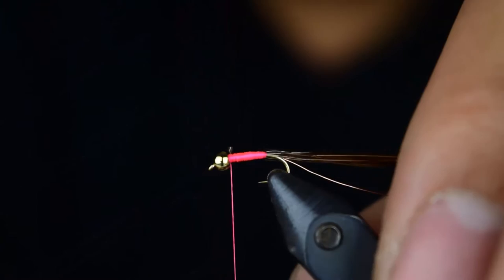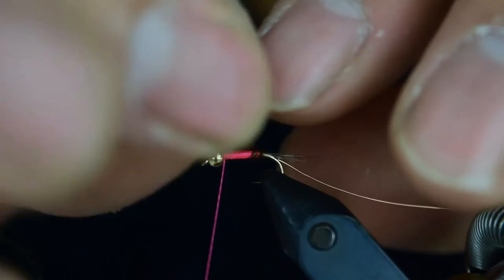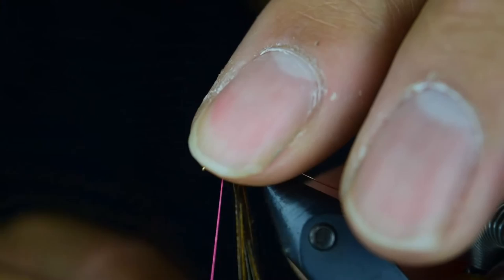We'll leave the thread right behind the bead. We'll take the pheasant tail and we're going to go ahead and wrap this around. Here I'm using my finger to make sure that the wraps don't come undone. If you have a vise that rotates you can do that as well, but here I'm just going to go ahead and wrap them this way.